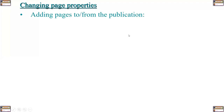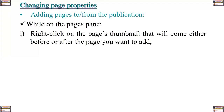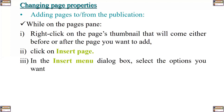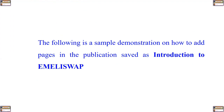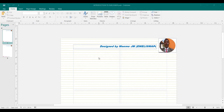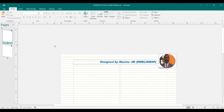You can also change the page properties. If you want to add more pages in the publication, while on the Pages pane, right-click on the page thumbnail that will come before or after the page you want to add, then click on Insert Page. In the Insert Page dialogue box, select the options you want and click OK. The following is a sample demonstration on how to add some pages in our publication Introduction to Emily Swap. In this publication we have two pages, and we can add more pages.